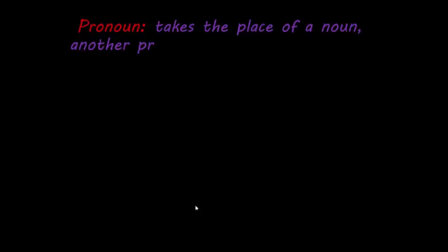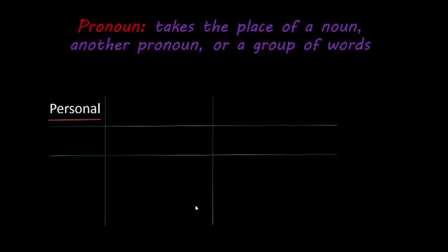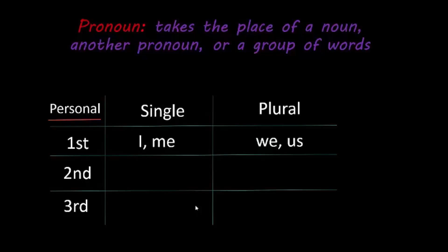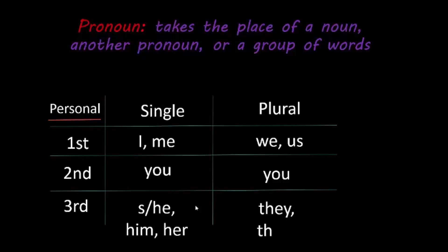Next, we're going to discuss the pronoun. A pronoun is a word that takes the place of a noun, another pronoun, or a group of words acting as a noun. There are two types of pronouns. The first is a personal pronoun. In first person singular you say I or me; plural is we or us. Second person singular and plural is the same: you. Third person singular is she, he, him, or her; plural is they or them.